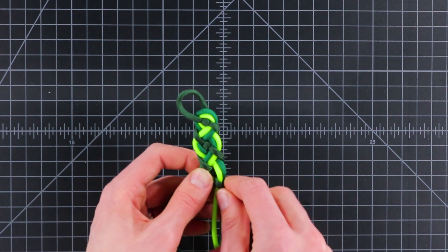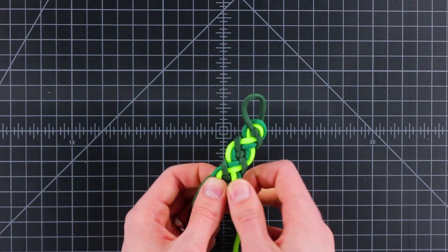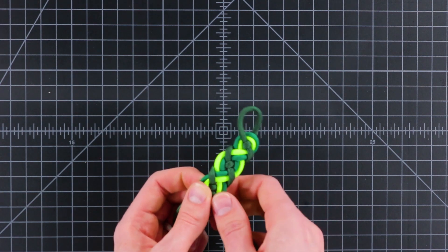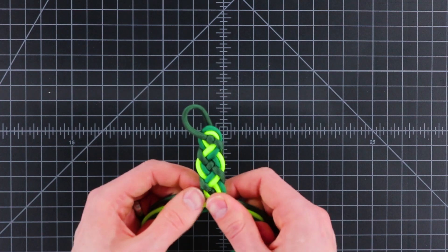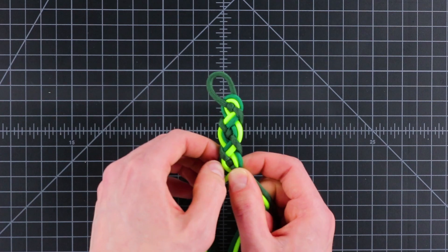The key is to keep it all even looking as you go because it'll be kind of hard to rearrange later. Just kind of look at your weave, make sure it looks even before moving on. And just continue this same pattern to the end.